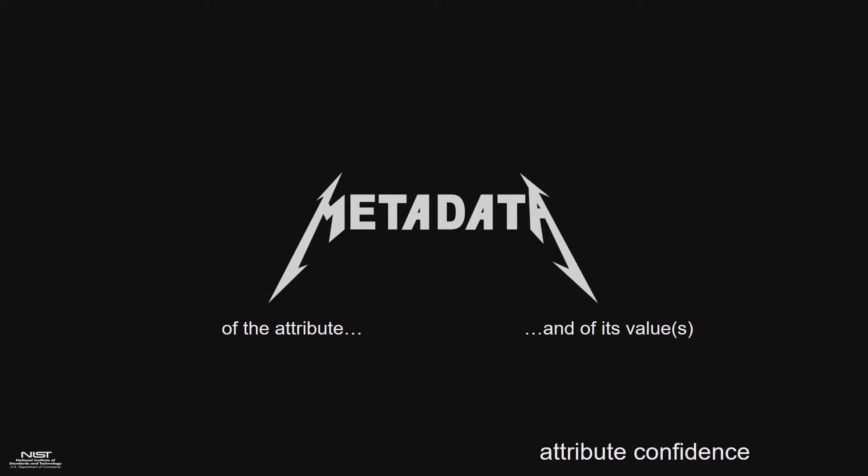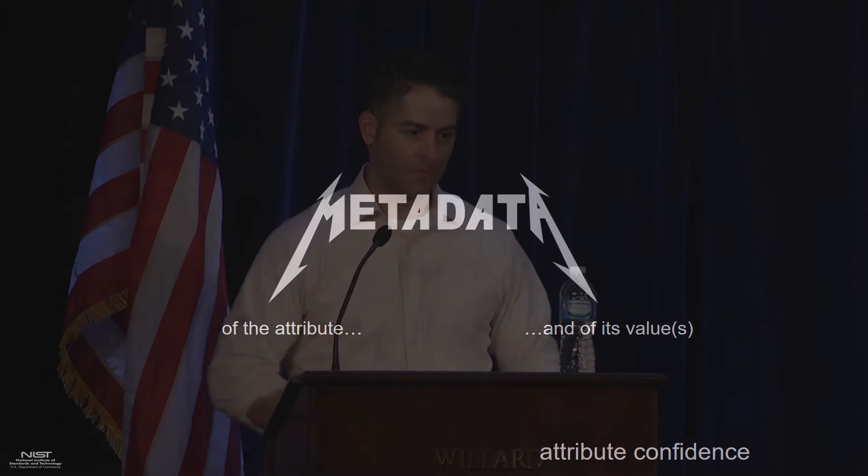Then there's attribute assurance — we're not calling it assurance yet; we don't know what to call it, as 'assurance,' 'confidence,' and 'trustworthiness' are all loaded terms. But we want to give agencies and consumers of attributes more information than just the value. How do I know where that value was derived from? What was the authoritative source? Where has it been in its life cycle? All this metadata is optional, but it gives the agency the ability to make a risk-based decision.